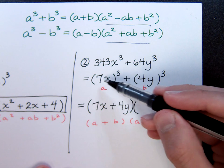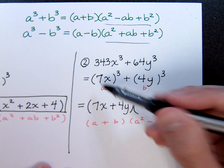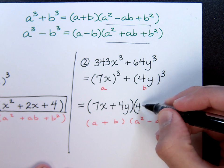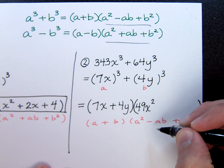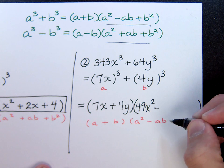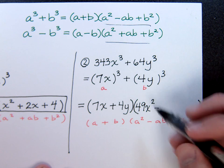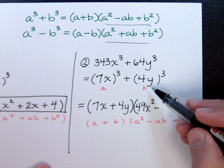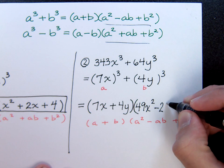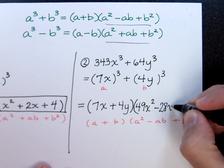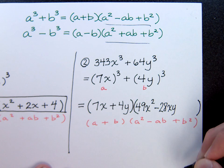Since a is 7x, I have to square that whole thing. So that's going to be 49x squared minus ab. So a is 7x, b is 4y, ab is their product. So 7 times 4 is 28, and then x and y.